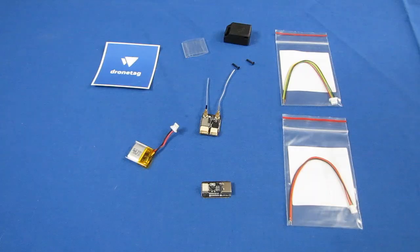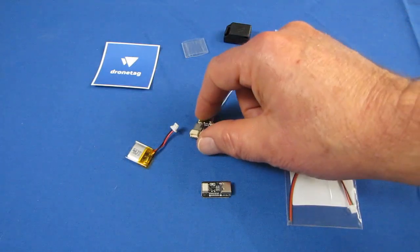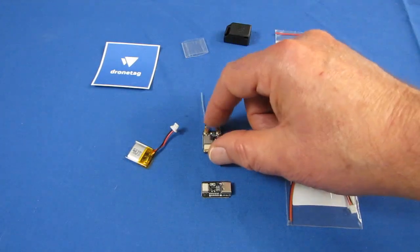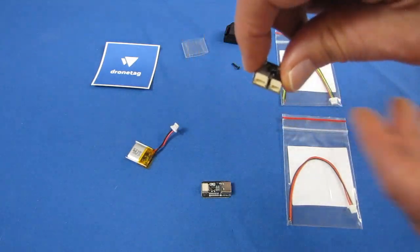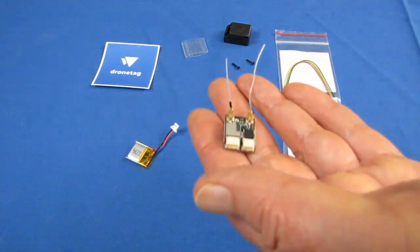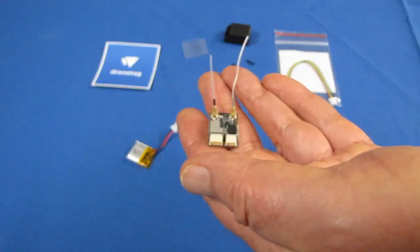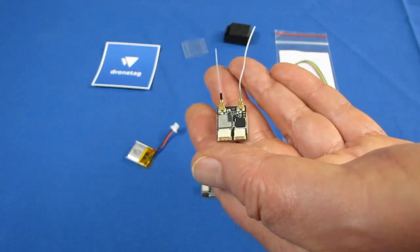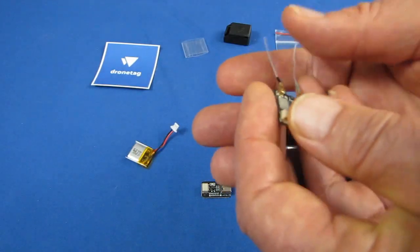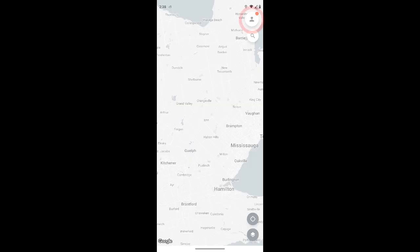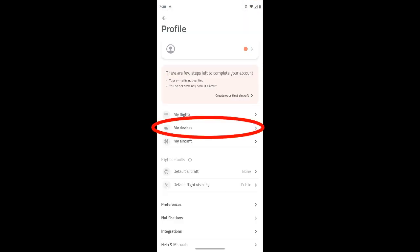Now this is configured, you configure this particular module using the DroneTag app available on Play and on the App Store. Now to set this up, it's pretty simple to set it up. First off, you need to open up the app and provide an email address to register the module with DroneTag. Next, you click on the profile icon in the app, and after that, you click on Register Device.